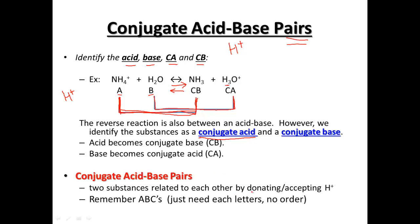We're going to pair them together with lines showing that the conjugate acid and base are paired, and the base and conjugate acid are paired. Two substances are related by either donating or accepting the hydrogen. Remember the ABCs — just the letters, no particular order. The acid and conjugate base are paired together, or the base and the conjugate acid are paired together.